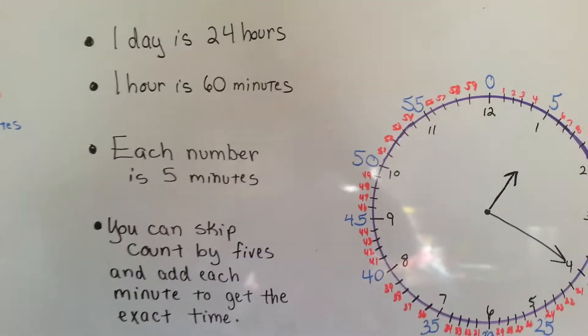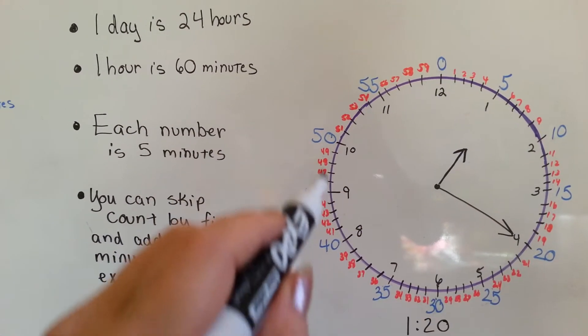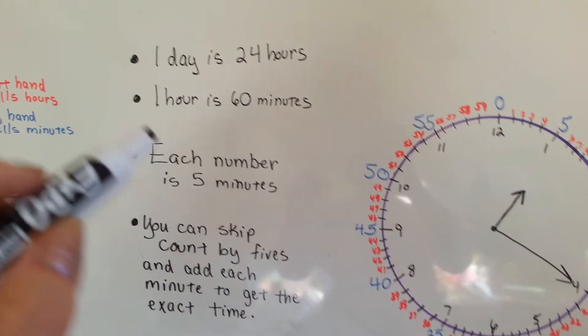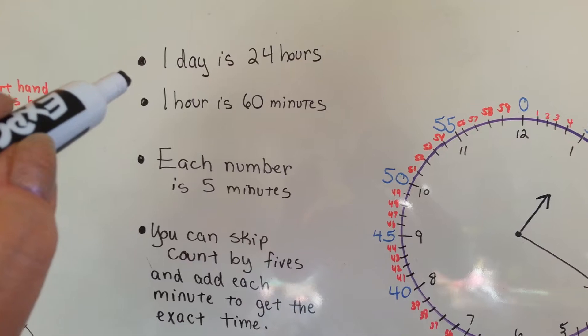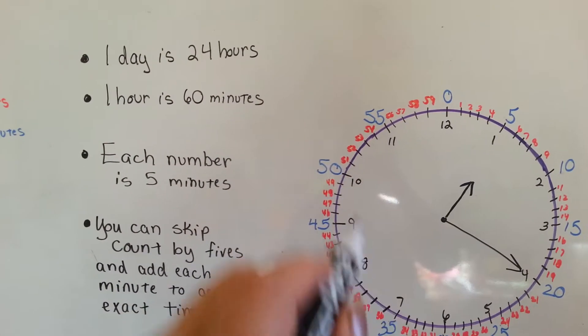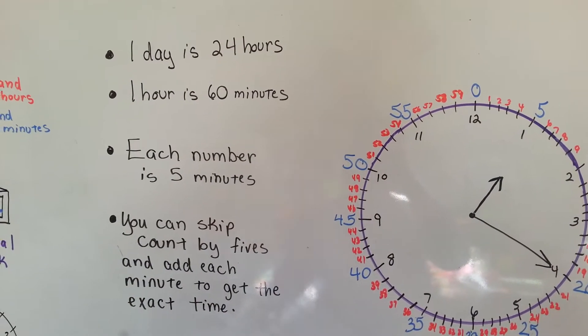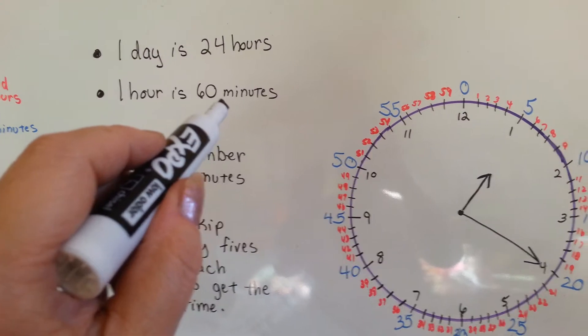So let's go over this real quick before we look at our clock with all of its minutes. Look at that. Look at all these minutes that are going around. One day is 24 hours. That means the hour hand of the clock has to go around two whole times around this clock every day. One hour is 60 minutes.